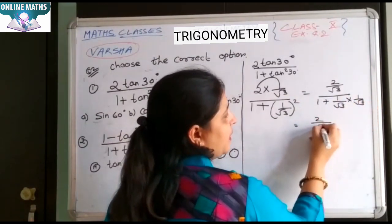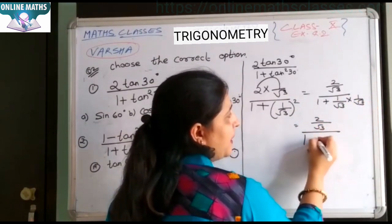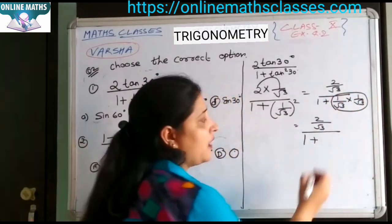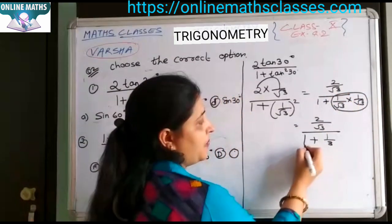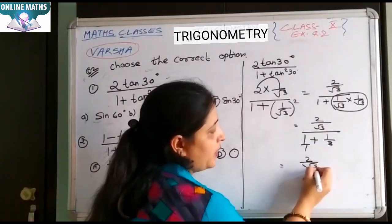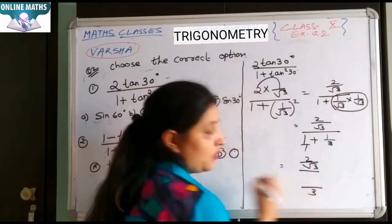It means 2 upon under root 3, 1 plus. Aap isko multiply kare. 1 upon under root 3. Ye 3 upon under root 3.